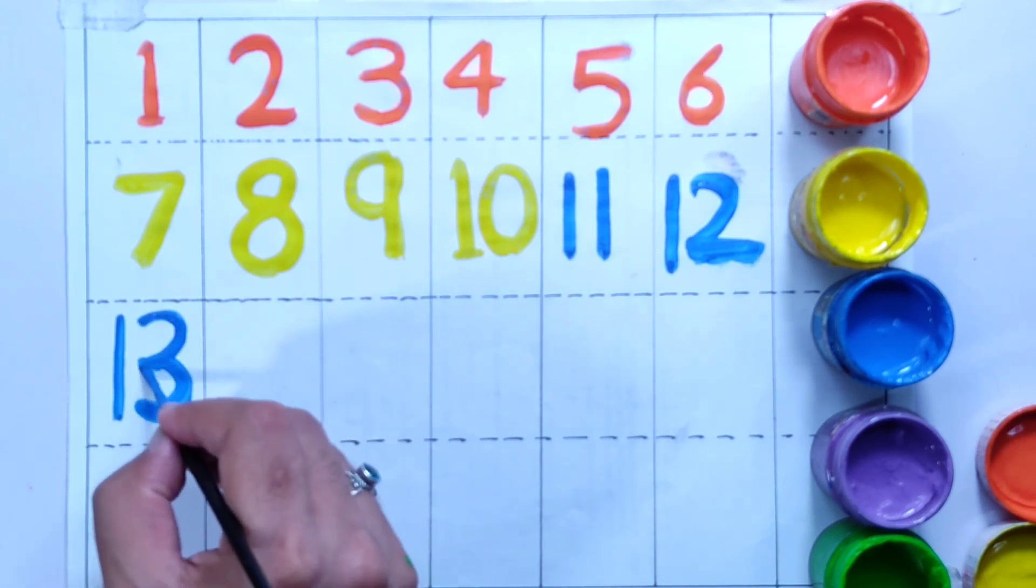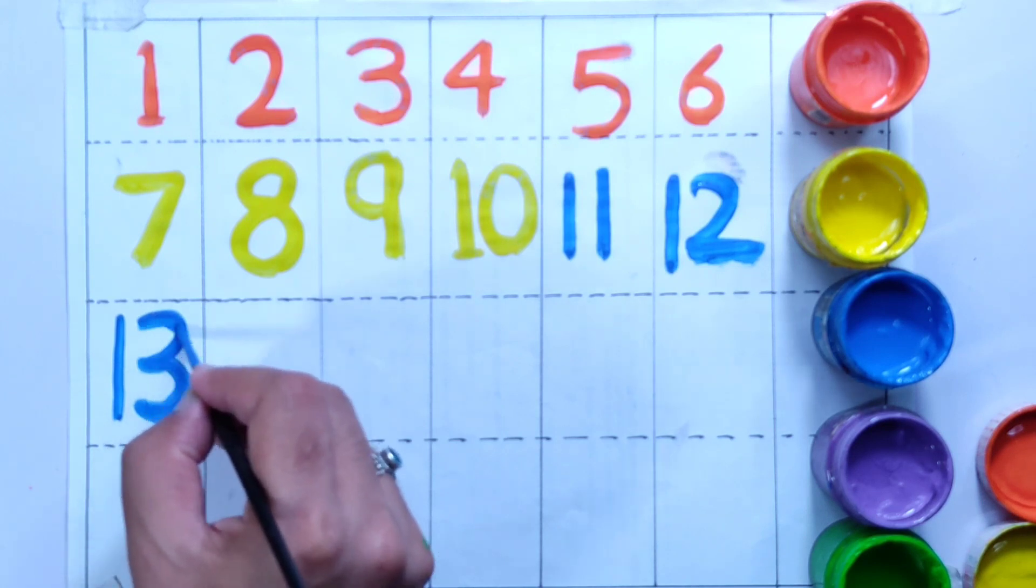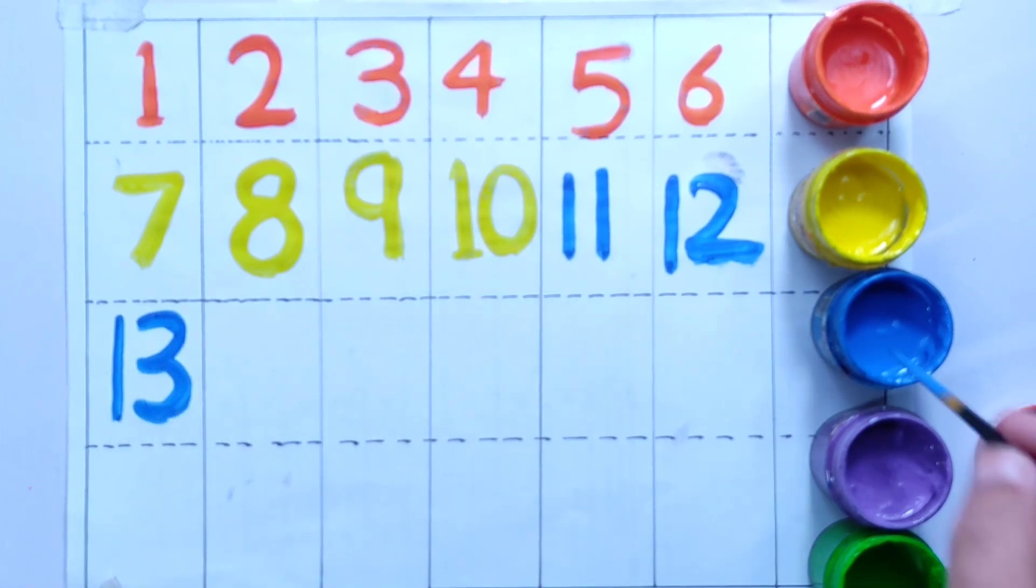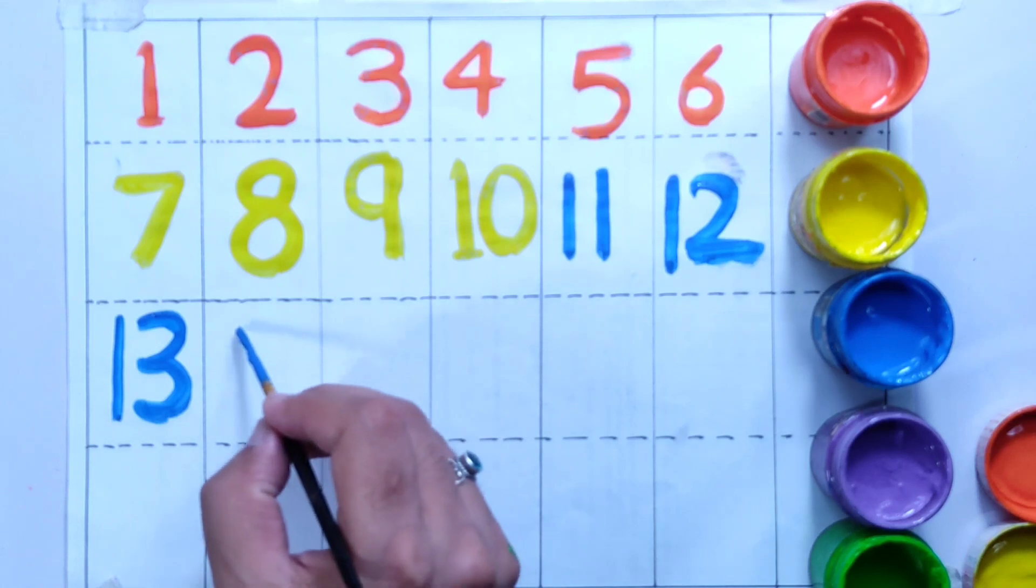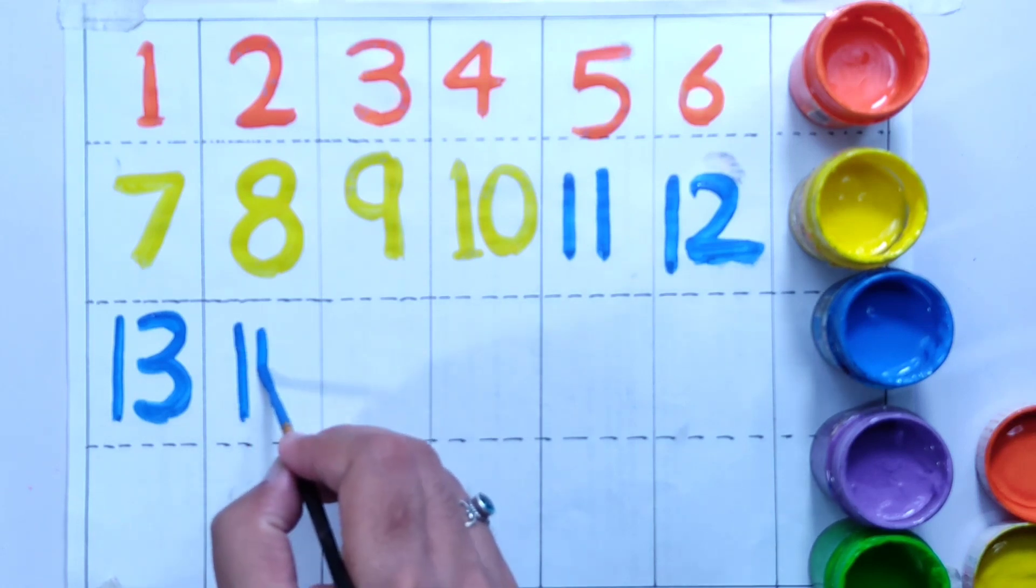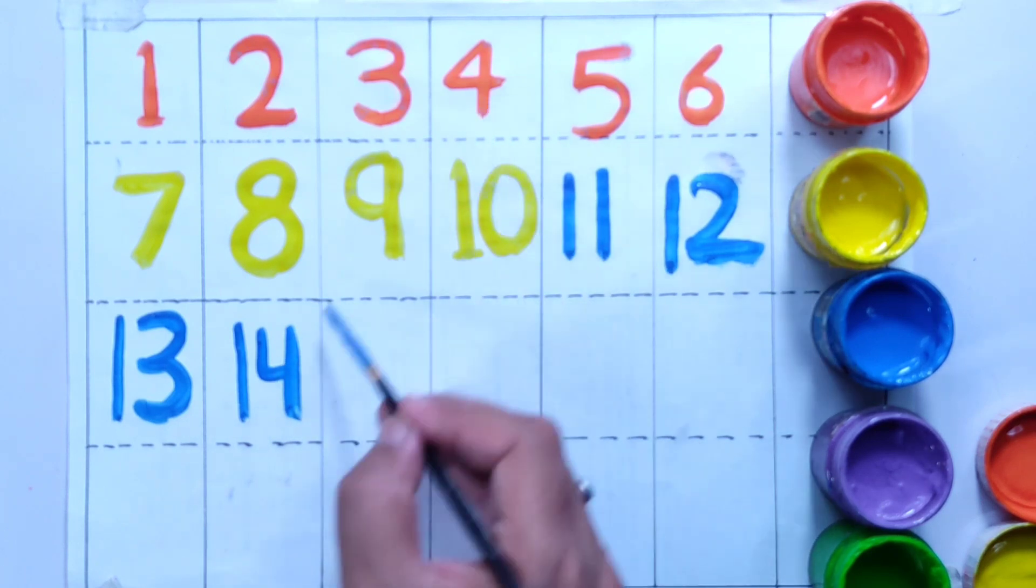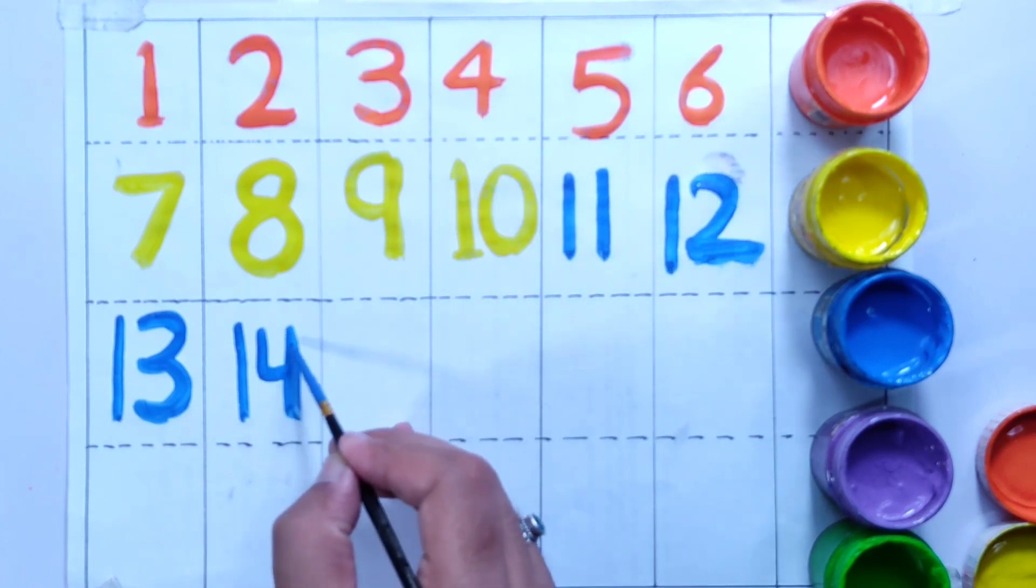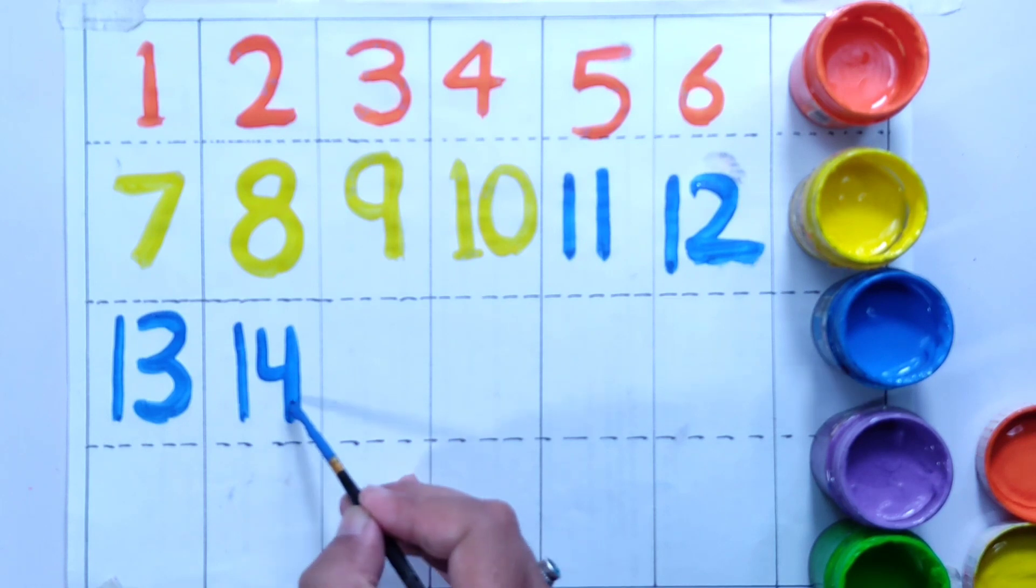With dark blue color. Number 14. You can write this 4 or this 4, both are correct.